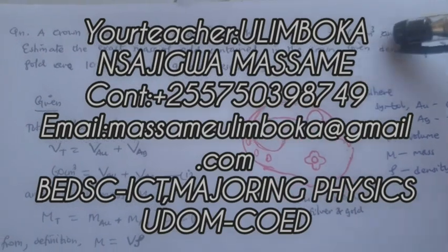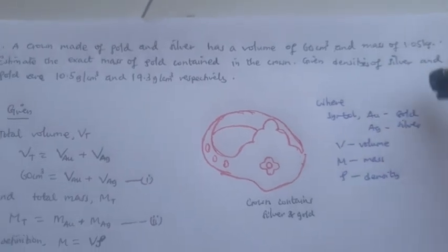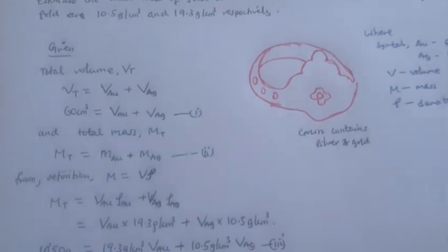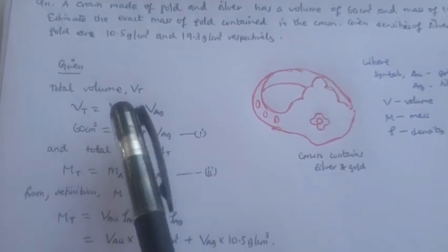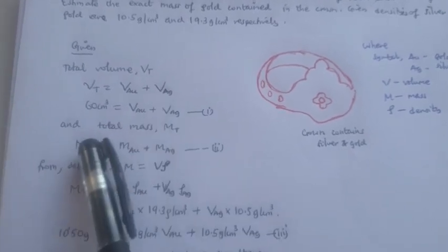We're converting this total mass into grams. Let us write an equation that represents total volume, that is volume of gold plus volume of silver. This is equation one.